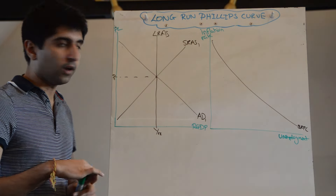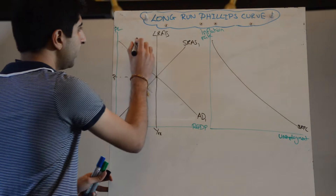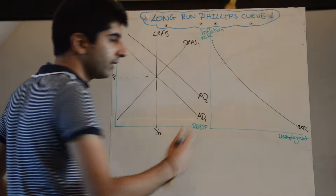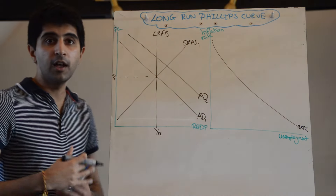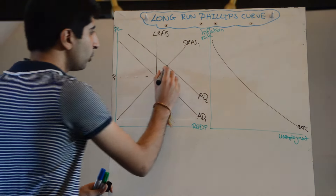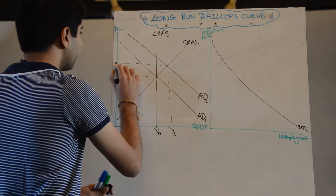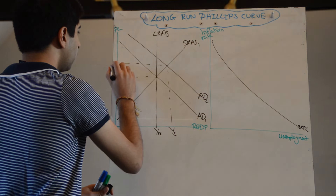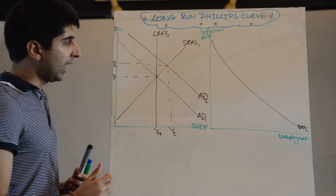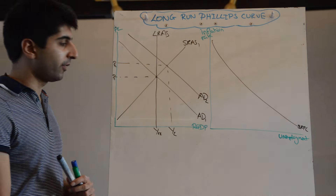Let's start with the classical model here on the left and let's take an increase in AD. So something has increased AD in the economy — maybe that's a sudden rise in consumption, a sudden rise in investment, a rise in net exports, whatever it might have been. In the short term, in the classical model, that will increase output from YFE to Y2 and will lead to an increase in demand-pull inflation.